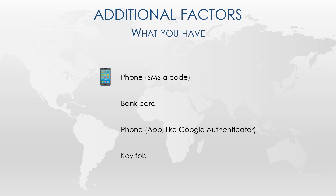This has been around for quite a while. Think of withdrawing money from the bank — you need a bank card, which is something you have, as well as a PIN, which is something you know. This could also be an app on your phone like Google Authenticator, or a physical device that you carry with you called a key fob.